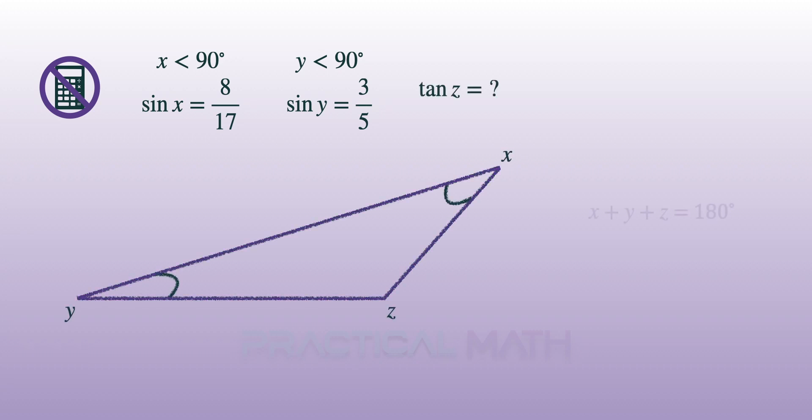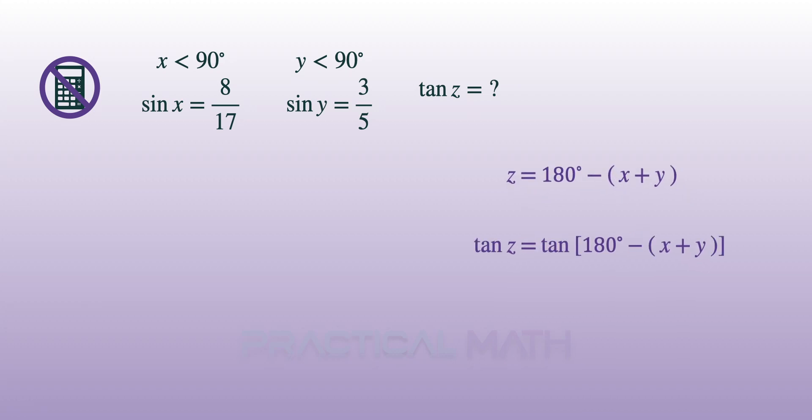Given that the sum of angles in a triangle is 180 degrees, angle Z can be found by subtracting the sum of angles X and Y from 180 degrees. Tangent Z will therefore equal tan(180° - (X + Y)).